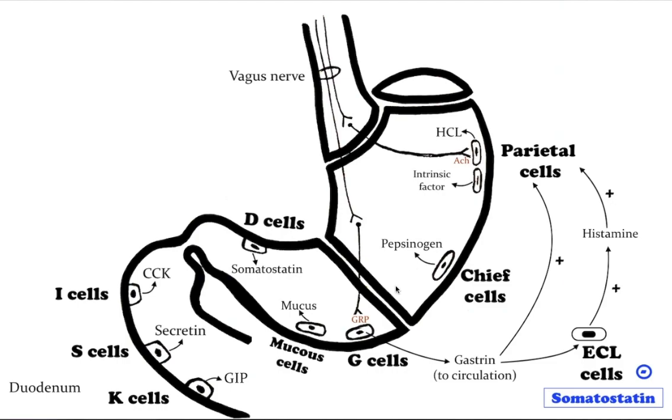G cells are found deep within the pyloric glands of the stomach antrum. The G cells secrete gastrin. Postganglionic fibers of the vagus nerve can release gastrin-releasing peptide during parasympathetic stimulation to stimulate secretion.